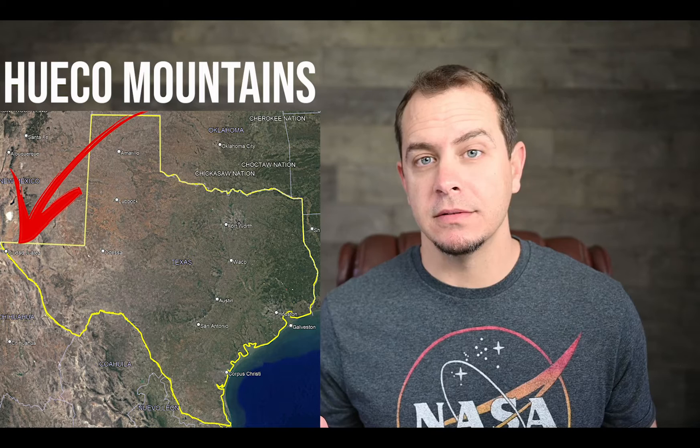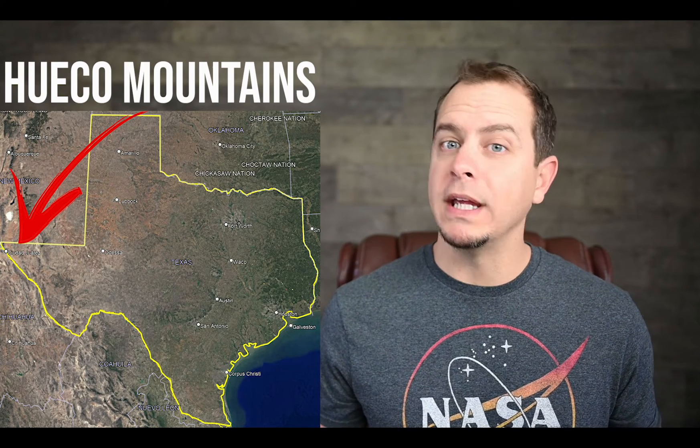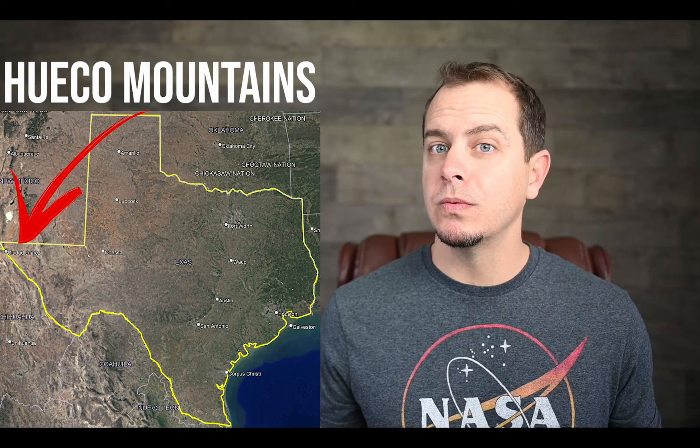The disease was first detected in Texas back in 2012 in some free-ranging populations of mule deer out in west Texas in an area called the Waco Mountains. The first actual whitetail with chronic wasting disease was discovered in Texas in 2015 out of a captive deer facility in Medina County — a county just west of San Antonio.